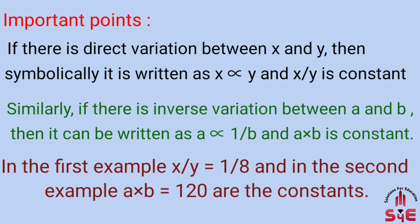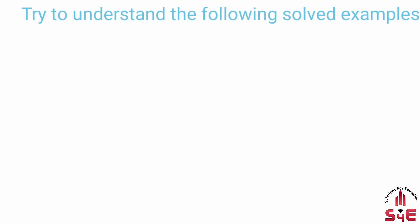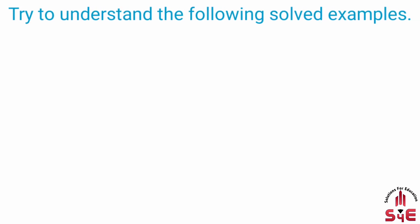Example 1 mein x upon y is equal to 1 upon 8 — ye ratio constant hai. Jabke example 2 mein a into b is equal to 120 — ye product constant hai. Try to understand the following solved examples.